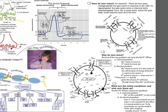So when potassium leaves, it makes the inside of the cell more negative. We have the opportunity to change this voltage up to positive voltages and then back down to negative voltages. The ability to change voltage by letting sodium come in and raise your voltage, and letting potassium leave to bring your voltage back down, is the basis of cellular signaling.